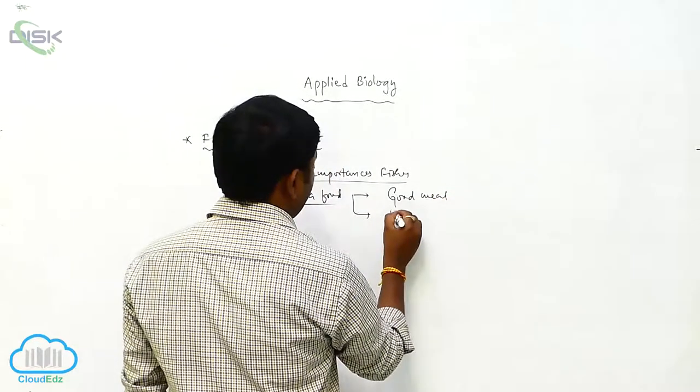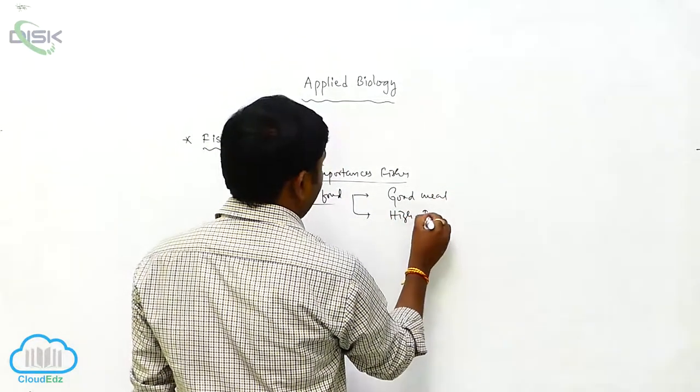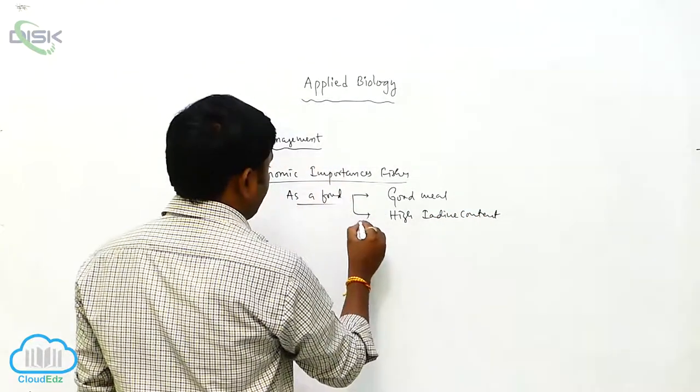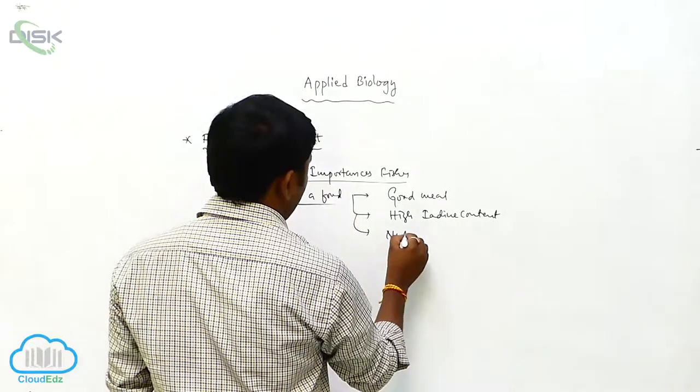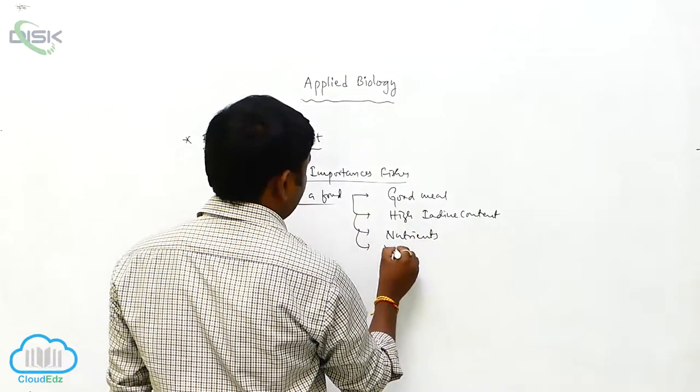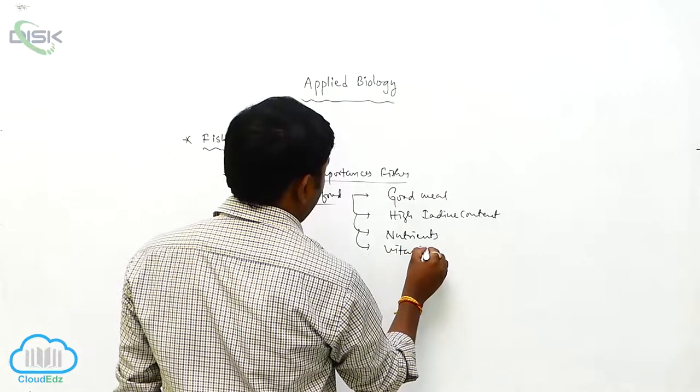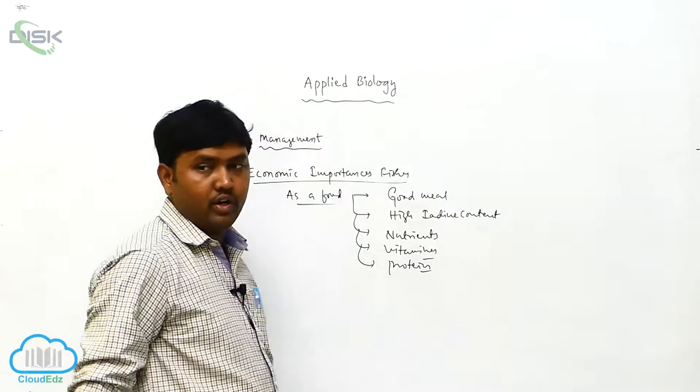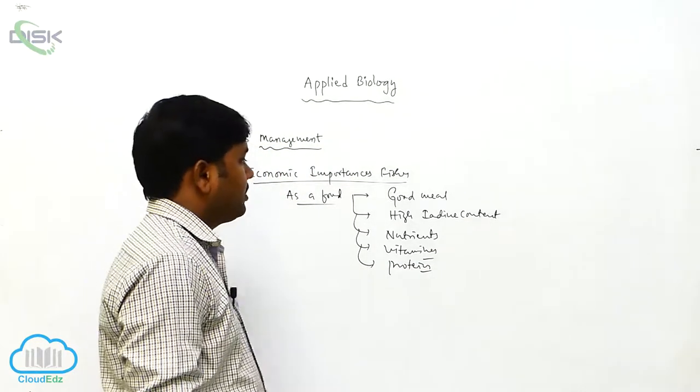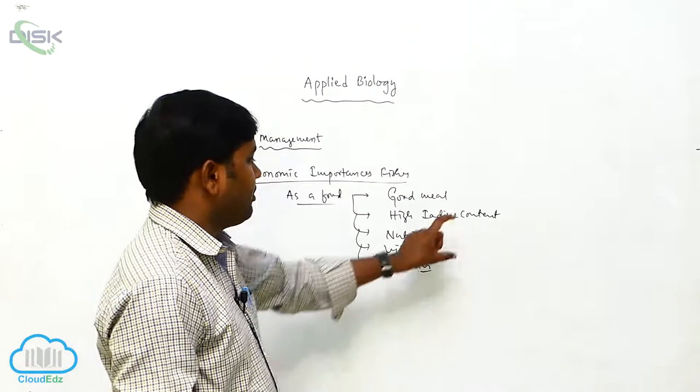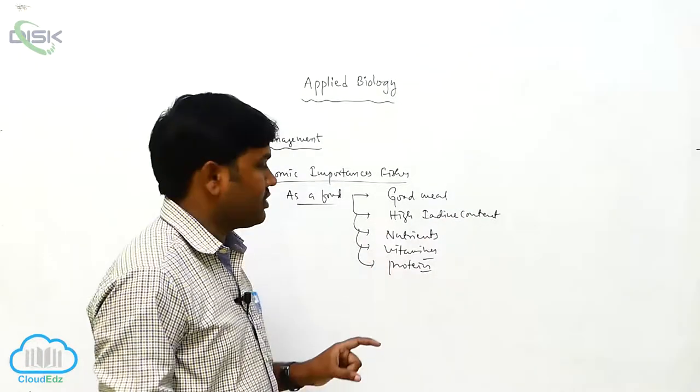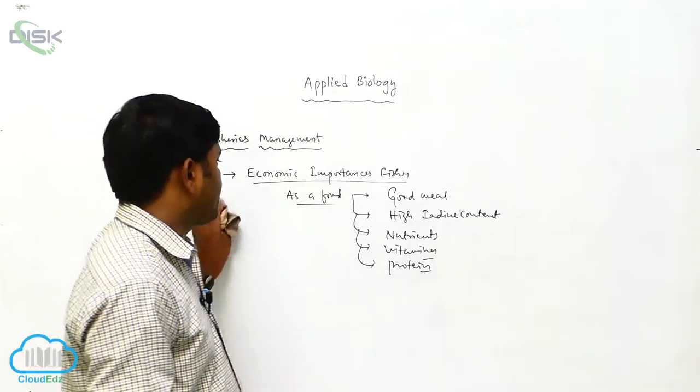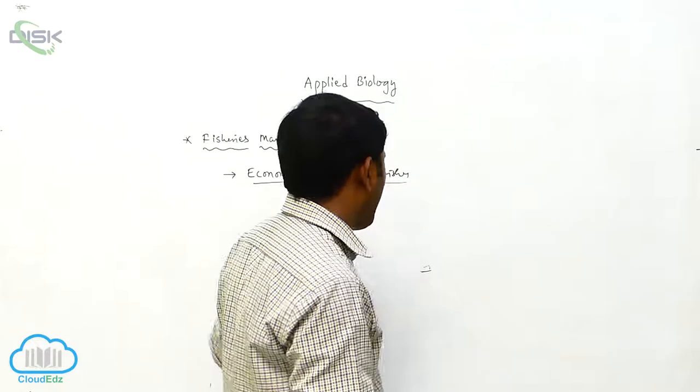It is a good meal and it has high iodine contents. As well as more nutrients, vitamins, and proteins are present in the food of fish. So these are good meals with high iodine content present in the fish, and nutrients, vitamins, proteins are present in the fish food.